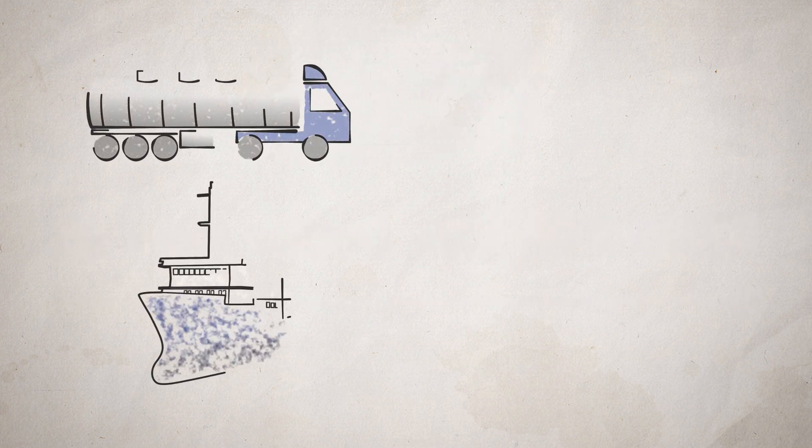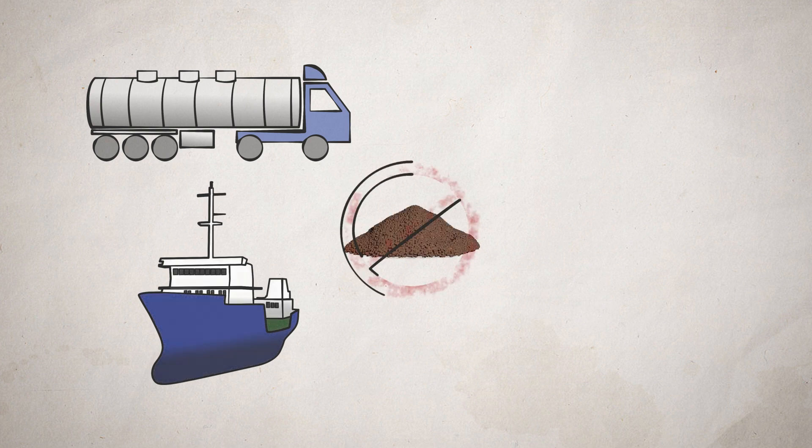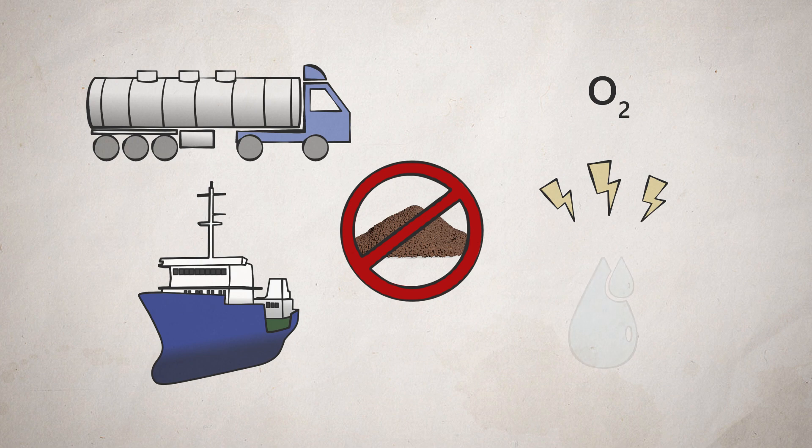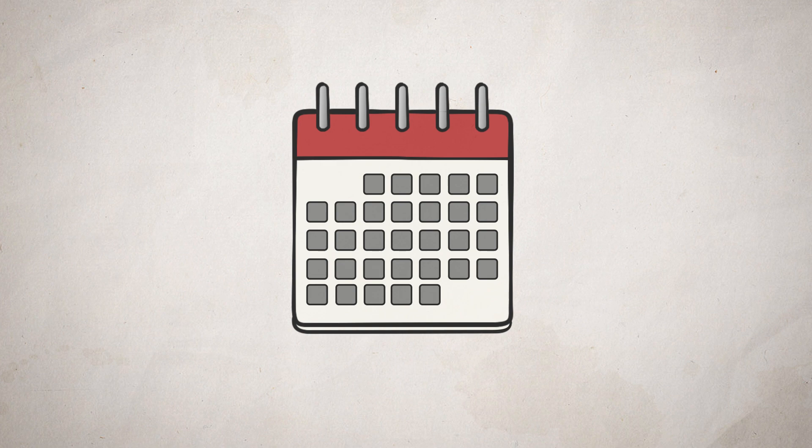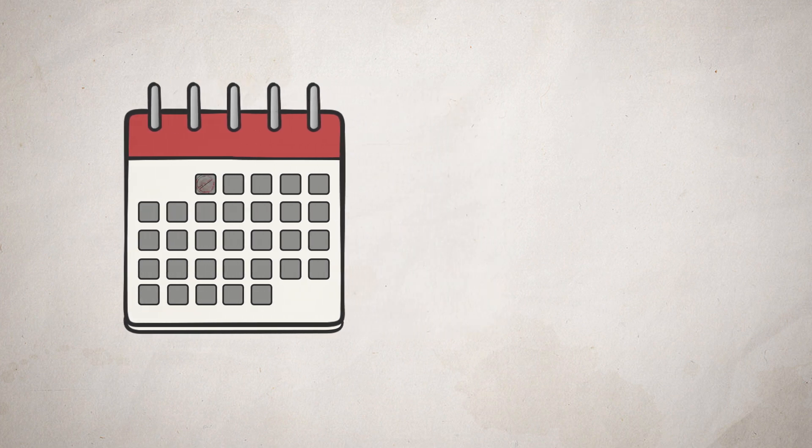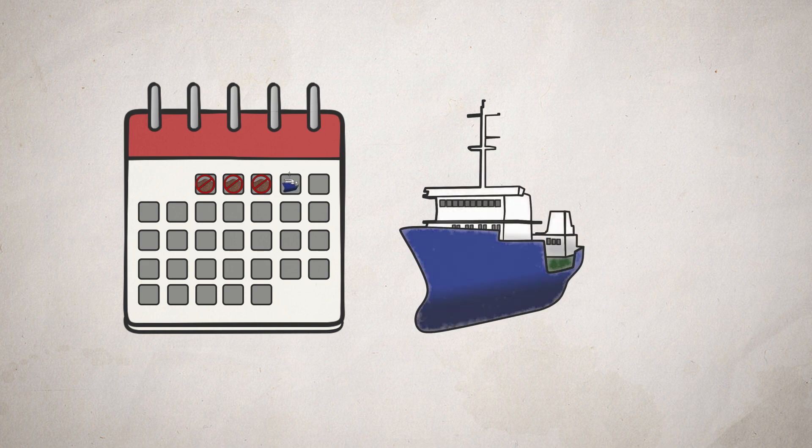In connection with transport, the fish are starved to reduce oxygen demand and increase stress tolerance, as well as to improve the quality of the transport water. There are different recommendations for the number of days the fish should be starved before transport. It is common for the fish to be starved for a minimum of three days before well-boat transport at temperatures above 6 degrees, and a minimum of five days at temperatures below 6 degrees.